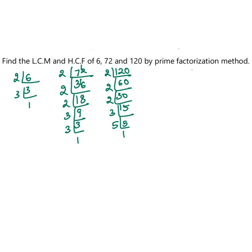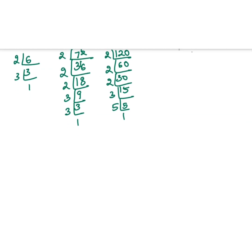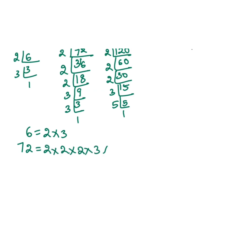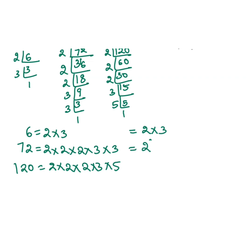Now to find the prime factors, we take the factors of each number. For 6 it is 2 × 3. For 72 it is 2 × 2 × 2 × 3 × 3, which we write as 2³ × 3². For 120 it is 2 × 2 × 2 × 3 × 5, written as 2³ × 3 × 5.